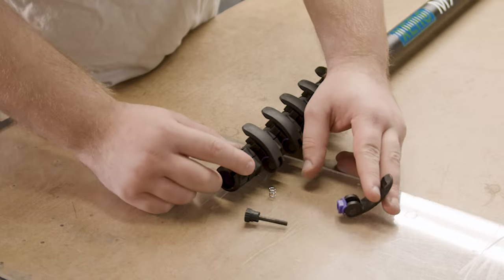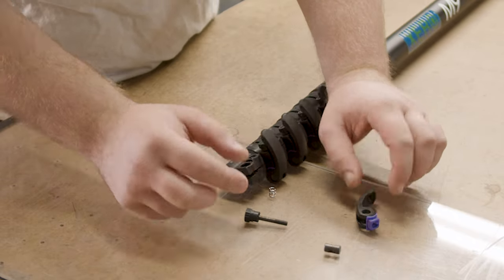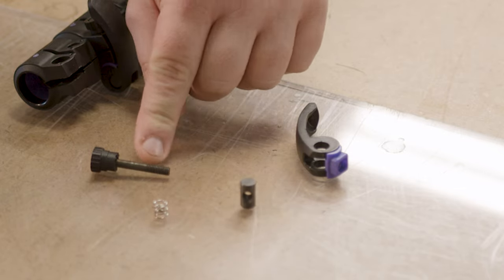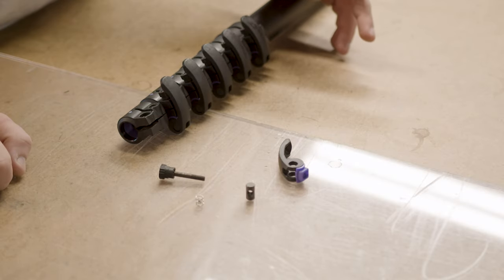And then you have all these pieces. Lever, barrel, spring, and the actual bolt. That's what your lever is made up of.